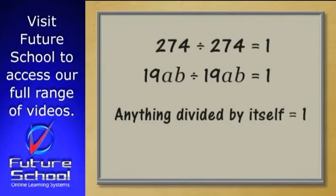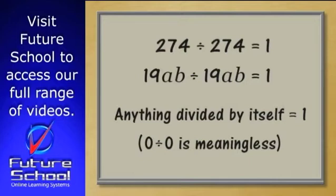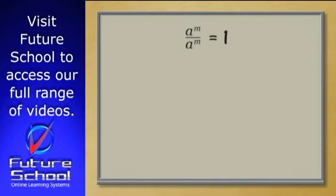There's one exception to this rule. You can't divide zero by zero, that's meaningless. Now, based on the principle that anything divided by itself equals one, what do we get when we divide a to the m by a to the m? Once again, the answer is one.